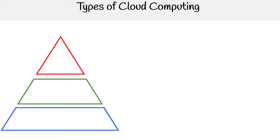We're looking at the categories of cloud computing. Now let's take a look at the types of cloud computing. We have this pyramid on the left hand side, and the idea is that each type is reliant on the technology beneath it.